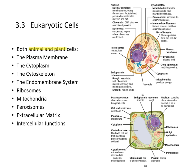Both animal and plant cells share some components: plasma membrane, cytoplasm, cytoskeleton, endomembrane system, ribosomes, mitochondria — yes, plant cells have mitochondria — peroxisomes, extracellular matrix, and intercellular junctions.